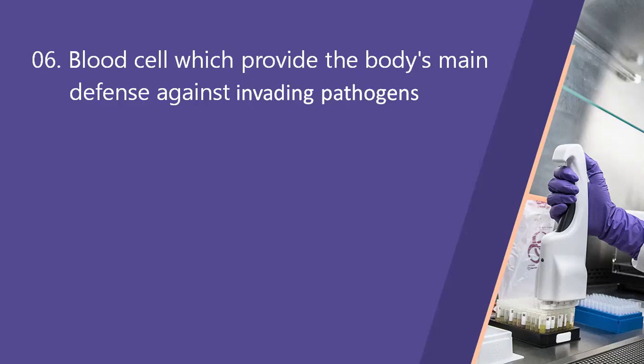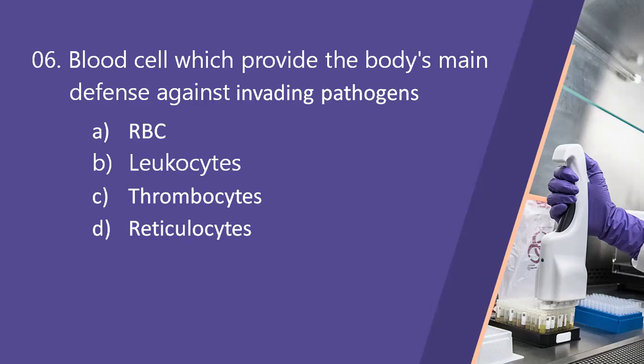Next question: blood cells which provide the body's main defense against invading pathogens. Option A, RBC. Option B, leukocytes. Option C, thrombocytes. Option D, reticulocytes. The right answer is leukocytes — they protect the body from infection. RBCs carry oxygen; thrombocytes form blood clots and aid wound healing; reticulocytes are immature RBCs that also help move oxygen. Leukocytes are the first defense mechanism.